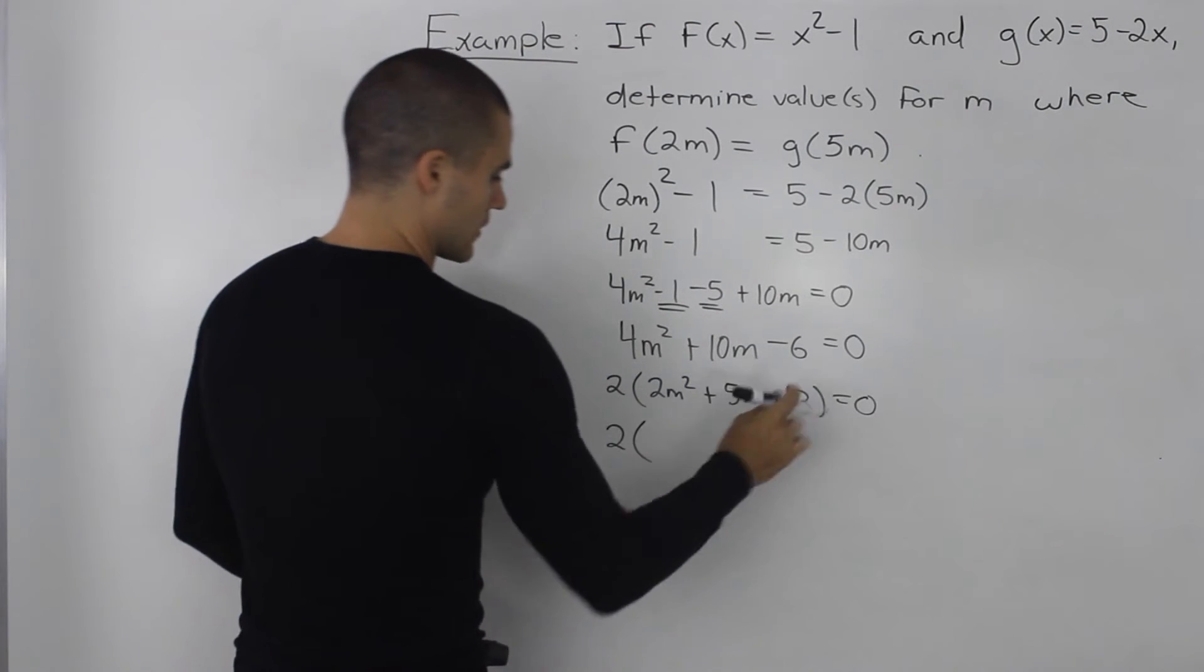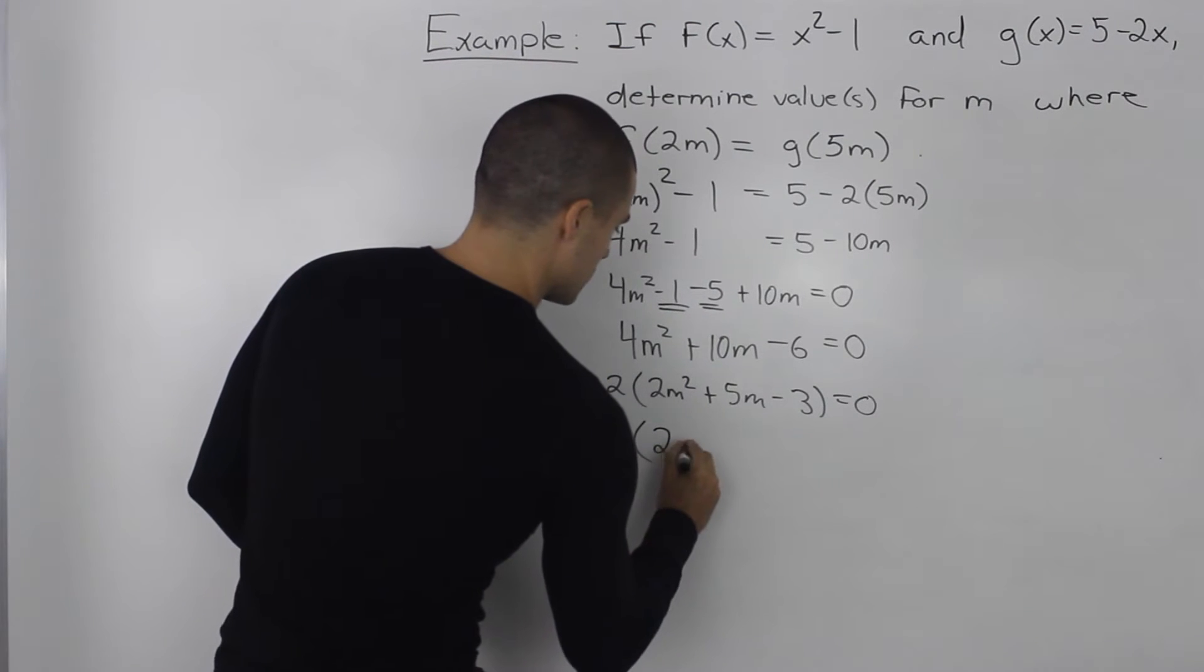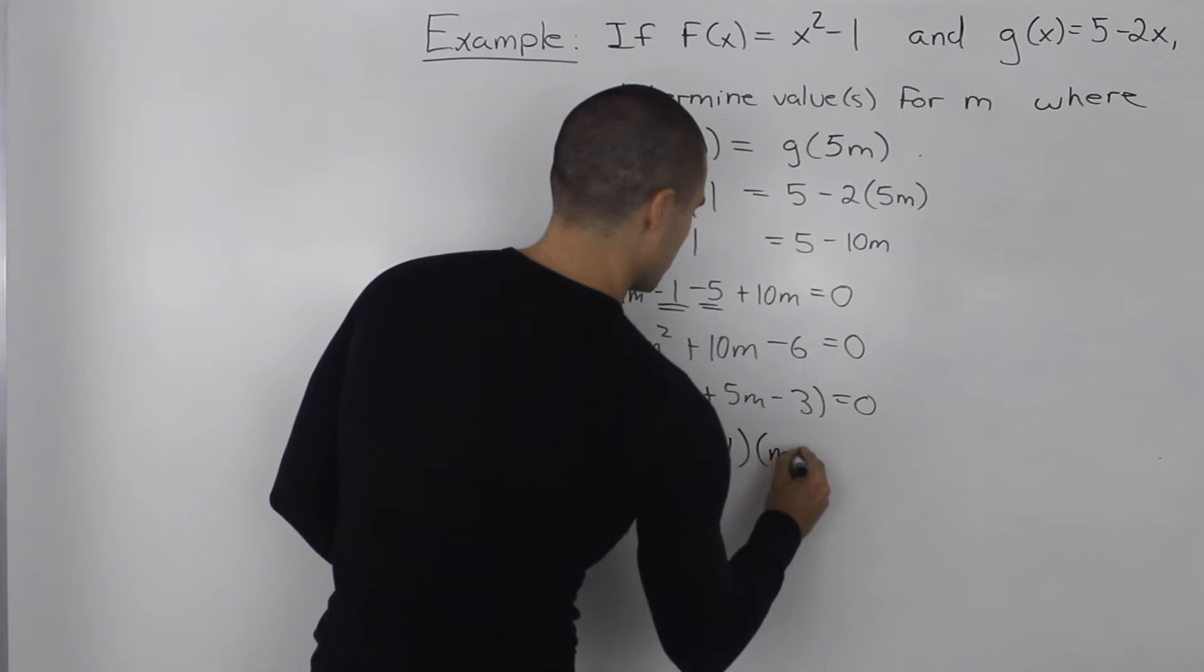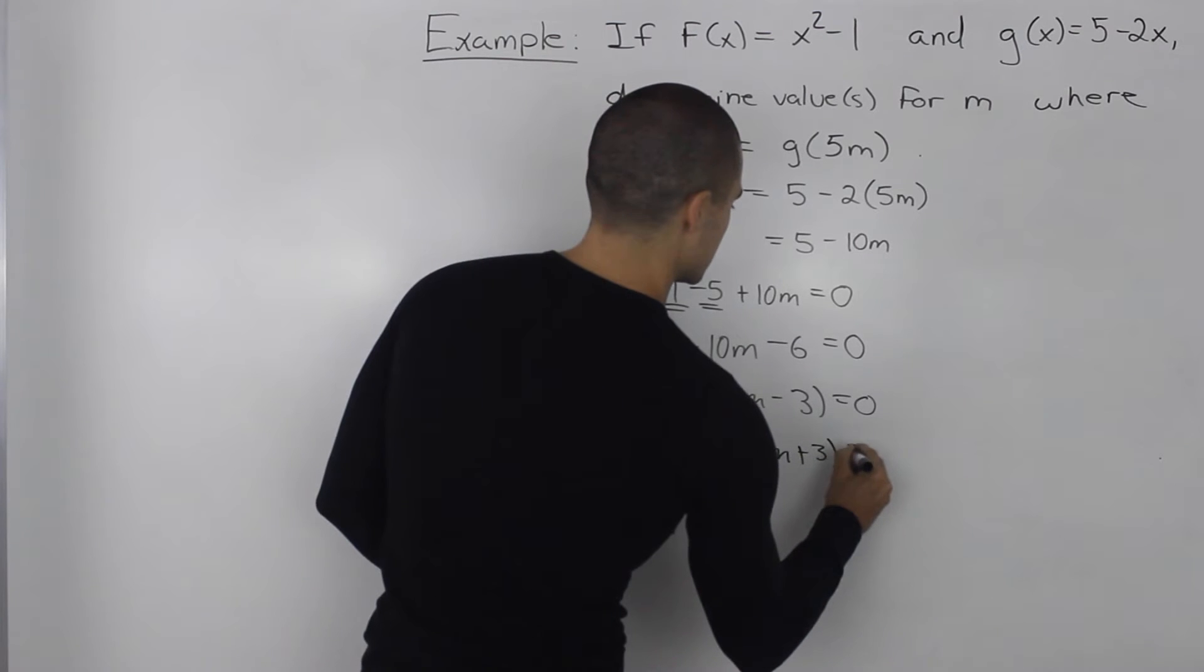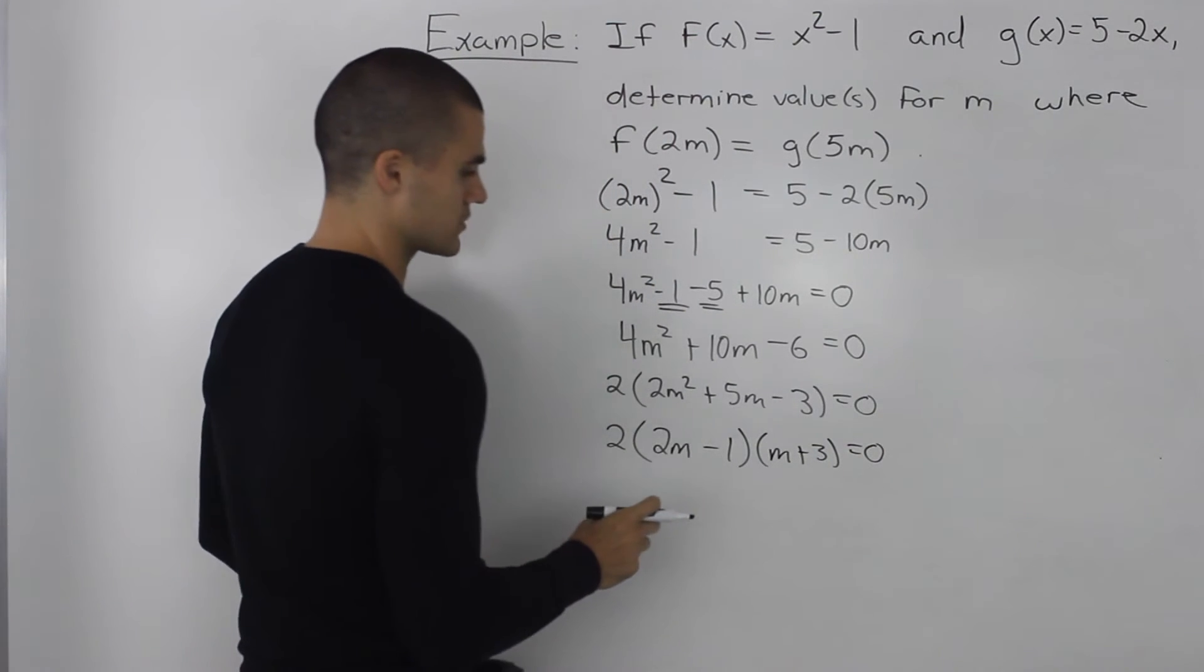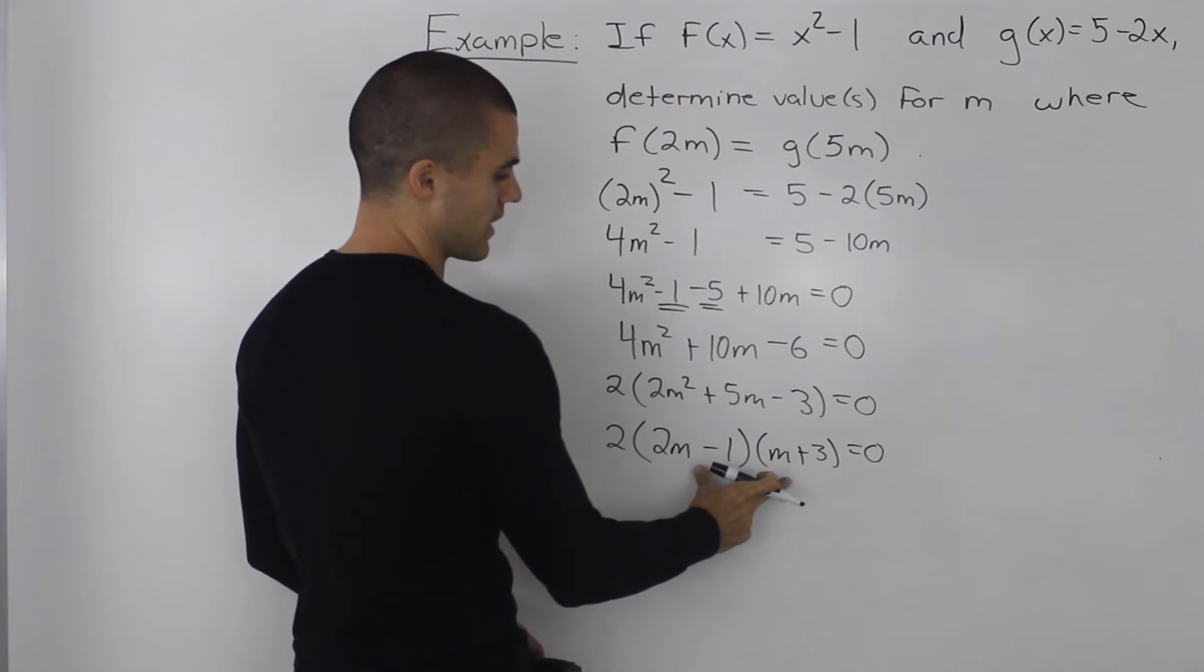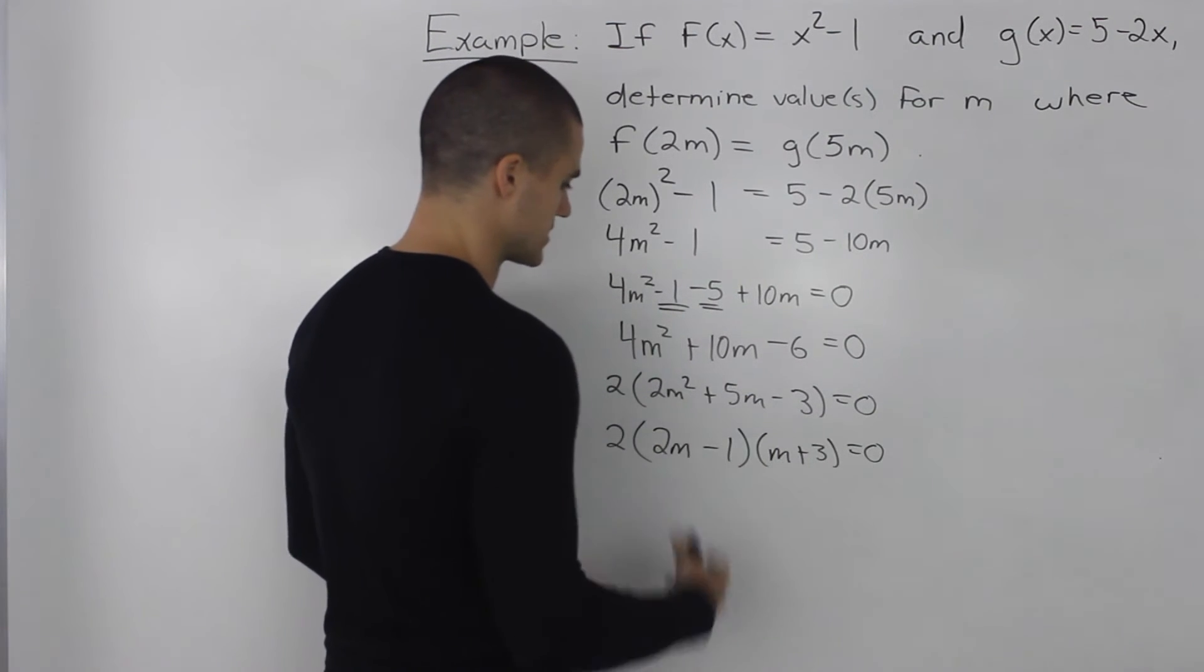And now factoring this here, this would be 2m minus 1, and then m plus 3 is equal to 0. You may want to go back and review factoring by decomposition to know how we got from this bracket to this bracket. It's from grade 10.